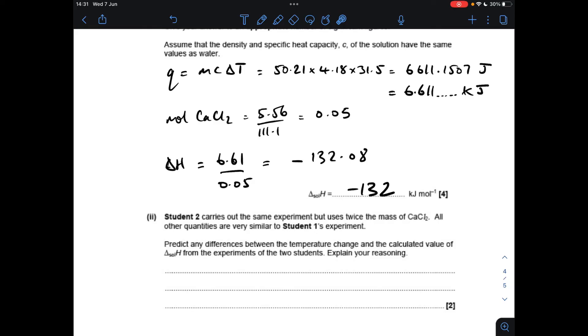So temperature first. Student two's used double the mass of calcium chloride, but the volume of water being heated up is the same, so it's going to get twice as hot. So the temperature rise would be double. So moving on to the enthalpy change of solution for student two, so if we think about what the knock-on effect of the double temperature rise would be.